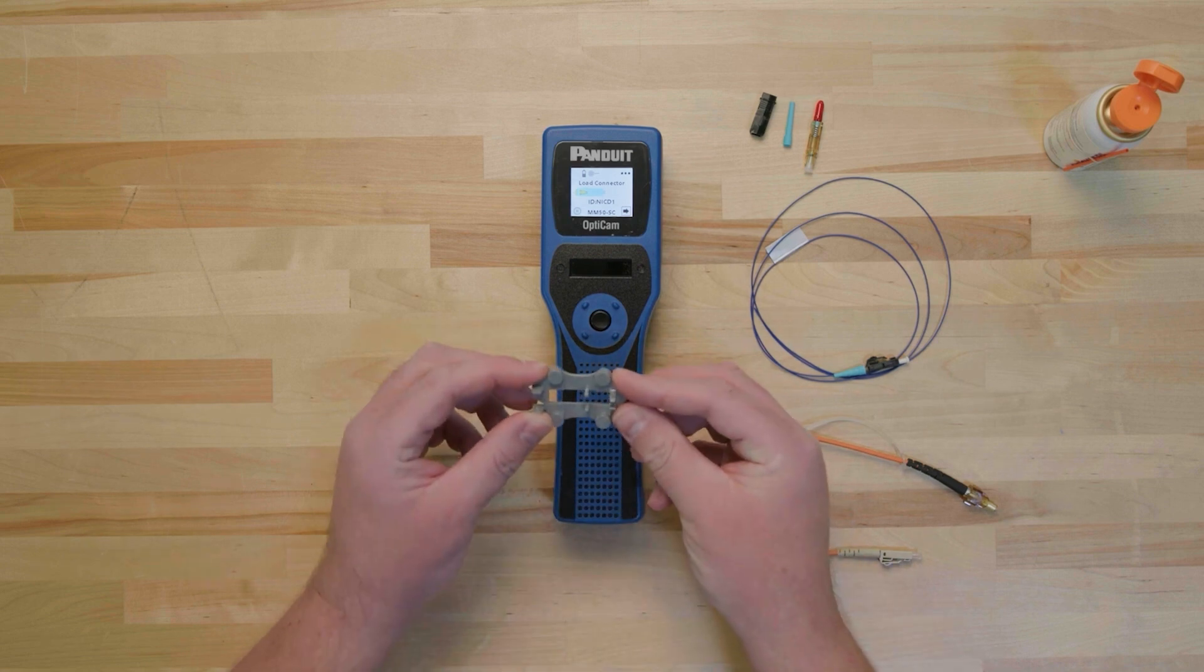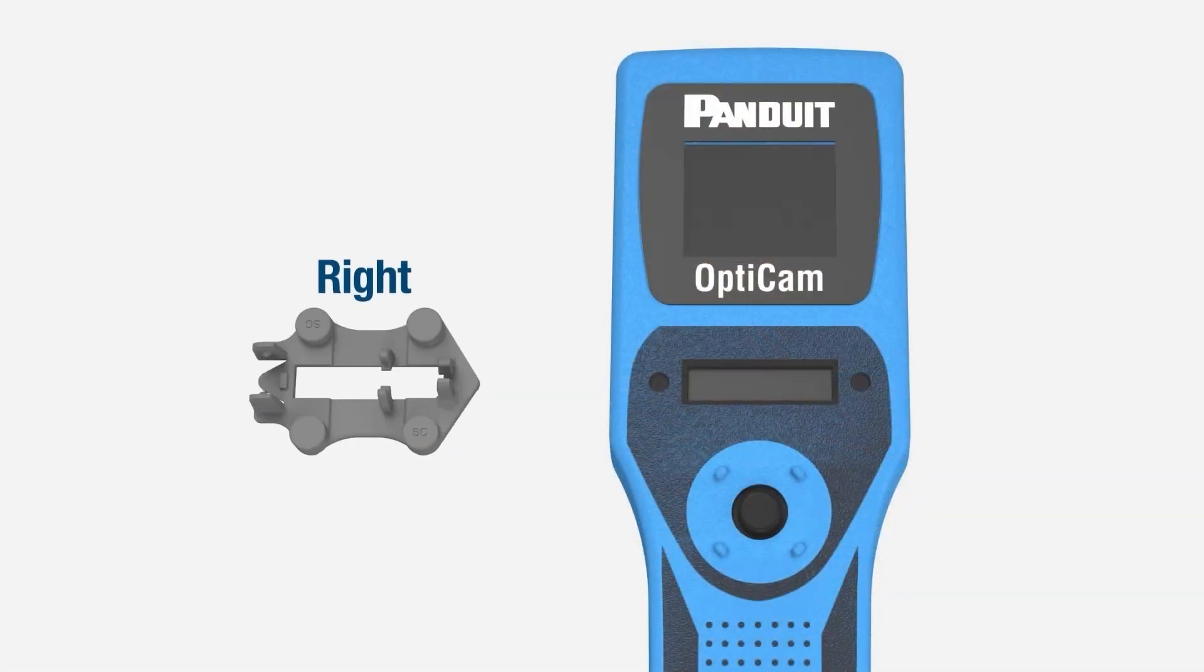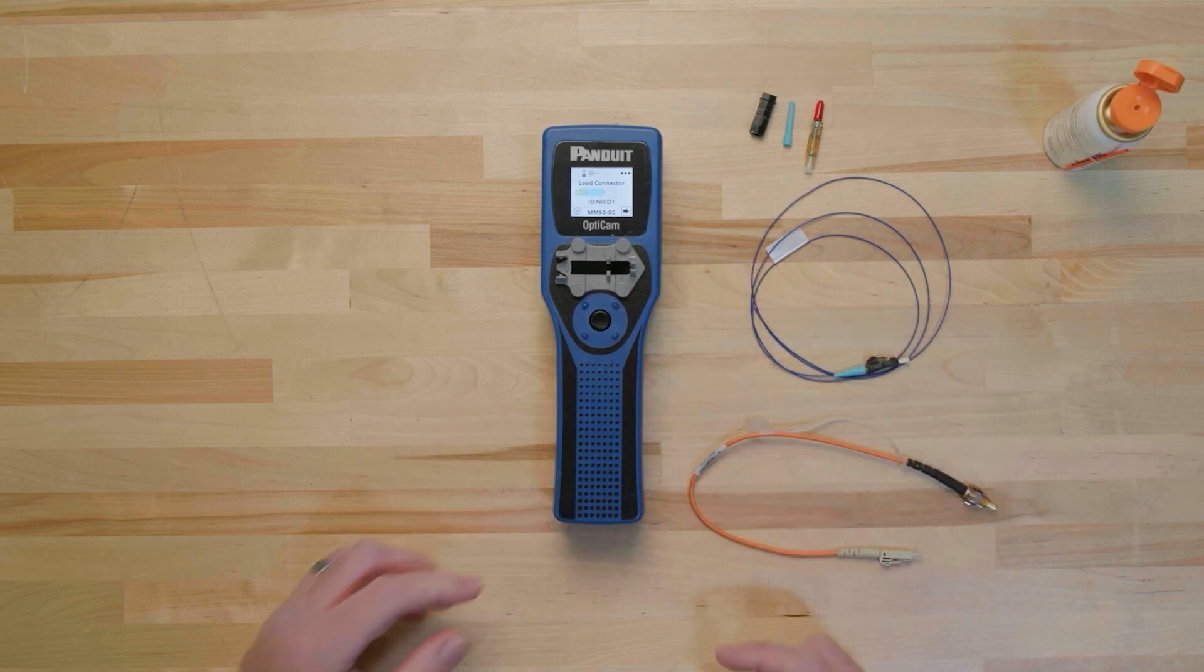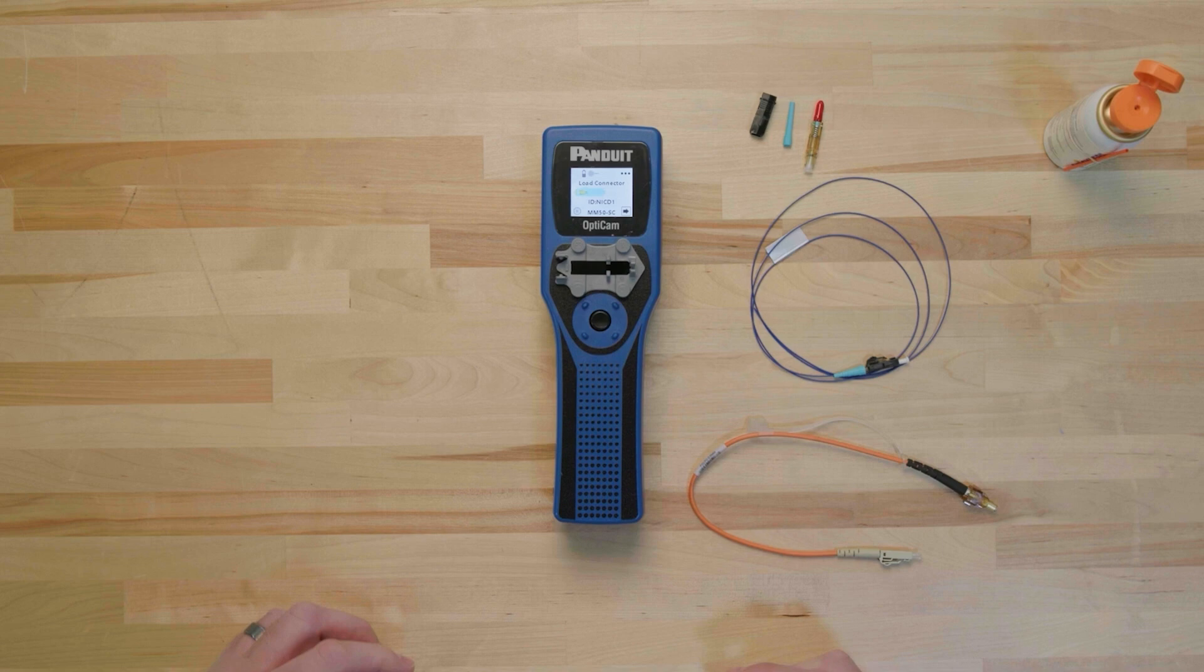Next, install the gray SC cradle. For a right-handed termination, orient the cradle so that the arrow points to the right. Place the cradle on top of the aperture window so it magnetically snaps into place.